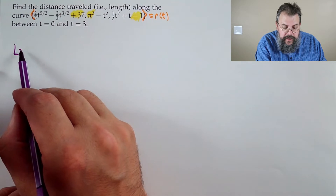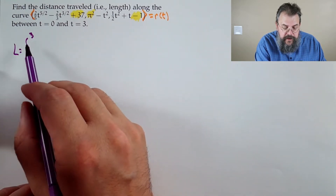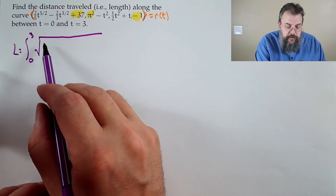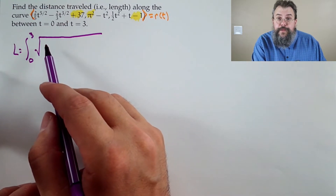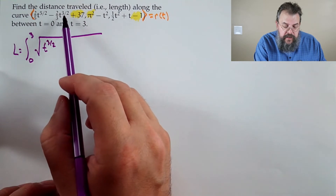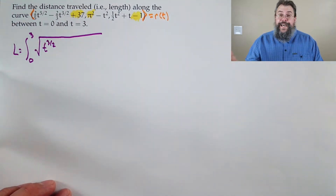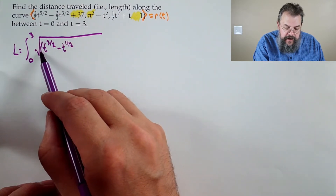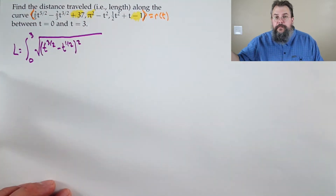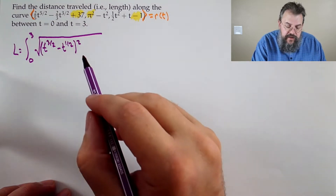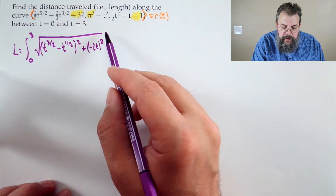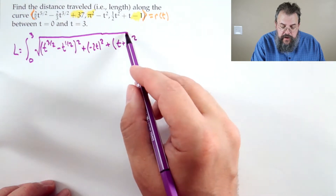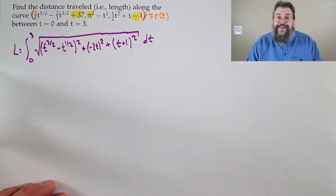So the length is ∫₀³ √(x′² + y′² + z′²) dt. The derivative of (2/5)t^(5/2): 5/2 times 2/5 gives t^(3/2). The derivative of −(2/3)t^(3/2): 3/2 times 2/3 cancels to give t^(1/2). The derivative of −t² is −2t. The derivative of (1/2)t² + t − 1 is t + 1.